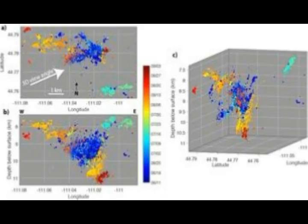But how can we distinguish among these processes? Such a determination is not simple and remains an important topic of ongoing research, but we can examine several aspects of swarms to guide our interpretations. At the Yellowstone volcano, everyone wants to know: is the swarm driven by magma? The question is particularly pressing if the swarm is occurring at shallow depths — within a couple of miles of the surface — because a shallow magmatically driven swarm could potentially be a precursor to an eruption.